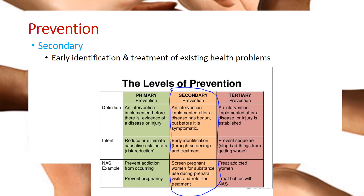Secondary prevention is different from primary prevention because it involves early identification and treatment of existing health problems. For example, screening or immunizing are secondary prevention strategies. Please stop the video, look up secondary prevention examples, and see how they fall under early identification and treatment of existing health problems.